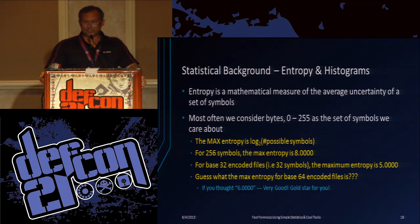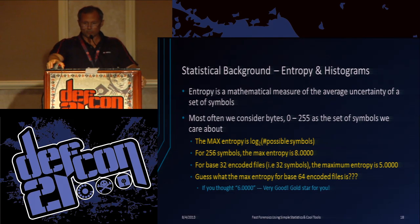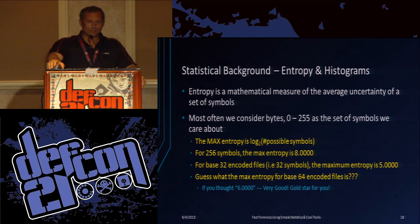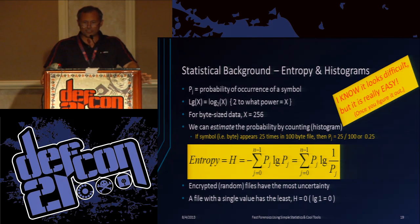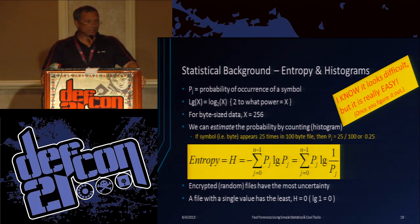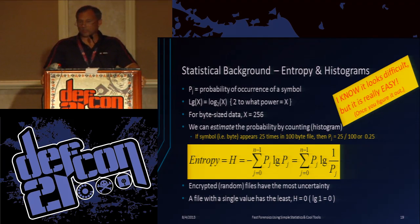For base 64, that's a little quiz — 2 to the 6 is 64. Little bit of statistics here: P is the probability. The log is often abbreviated LG to mean log base 2, which is simply 2 to what power equals x. So log base 2 of 256 is 8, log base 2 of 4 is 2, log base 2 of 8 is 3, and so on.